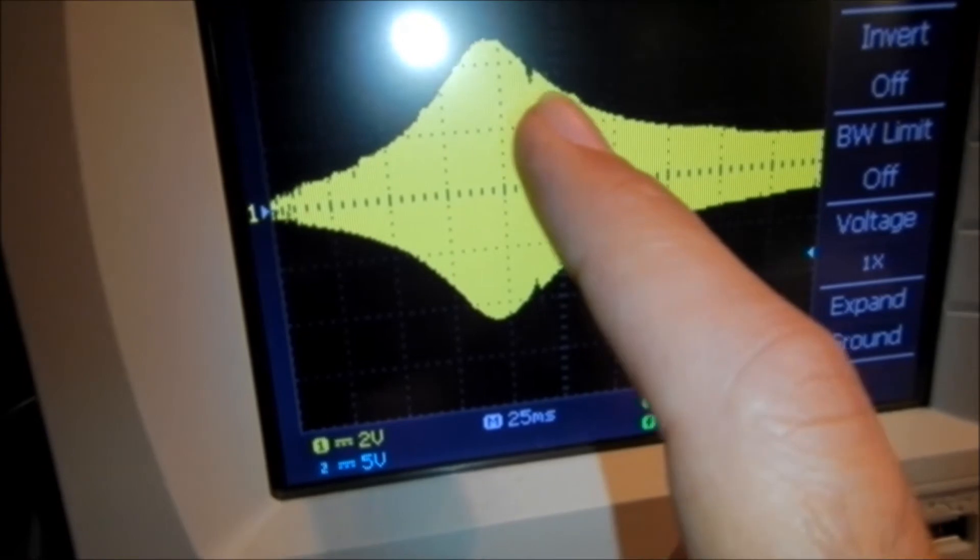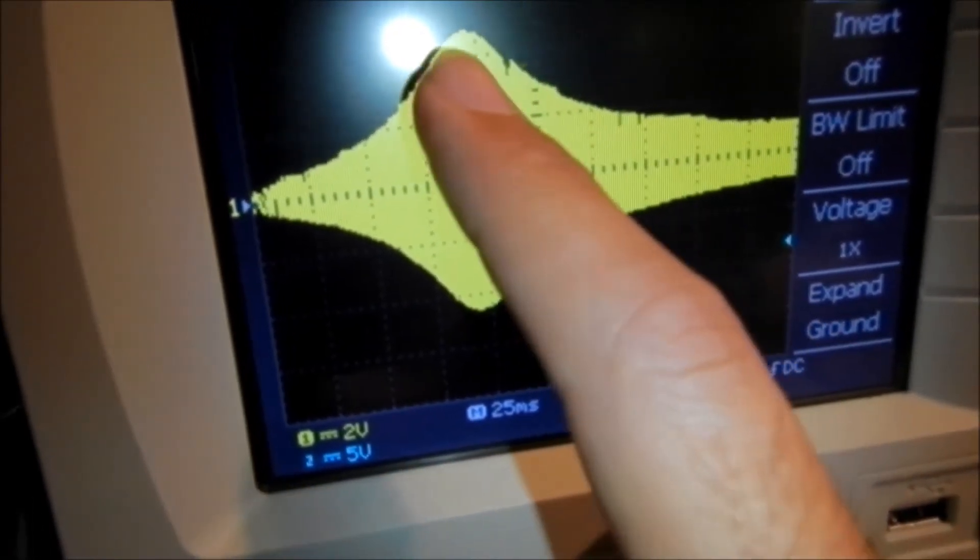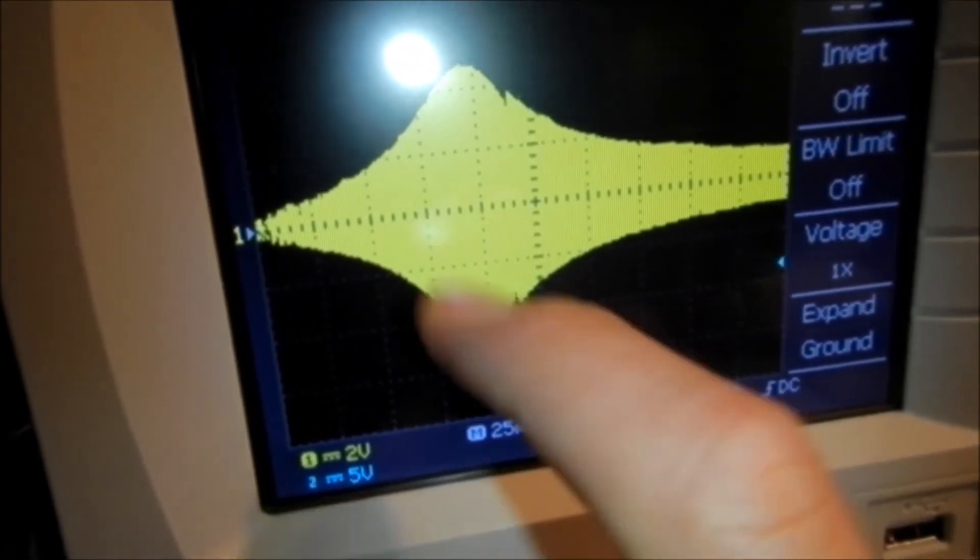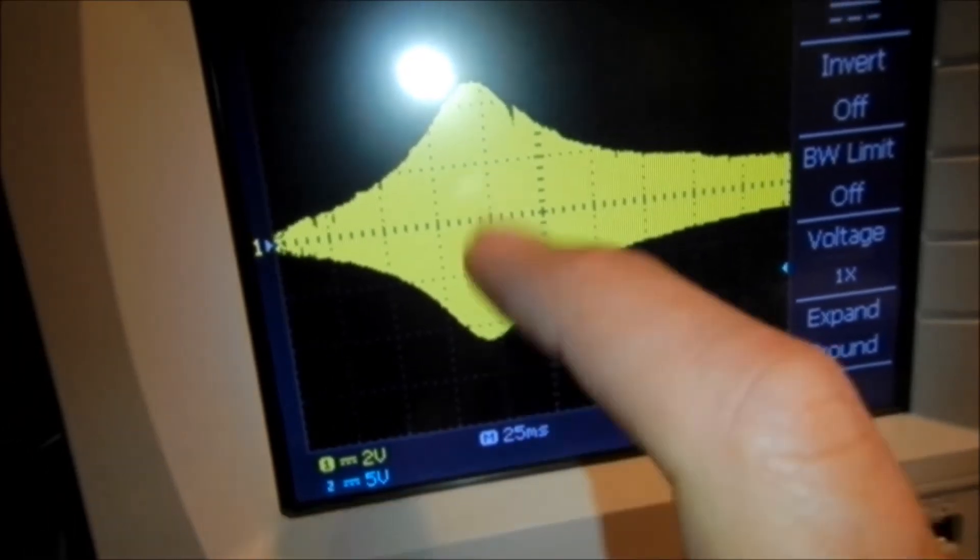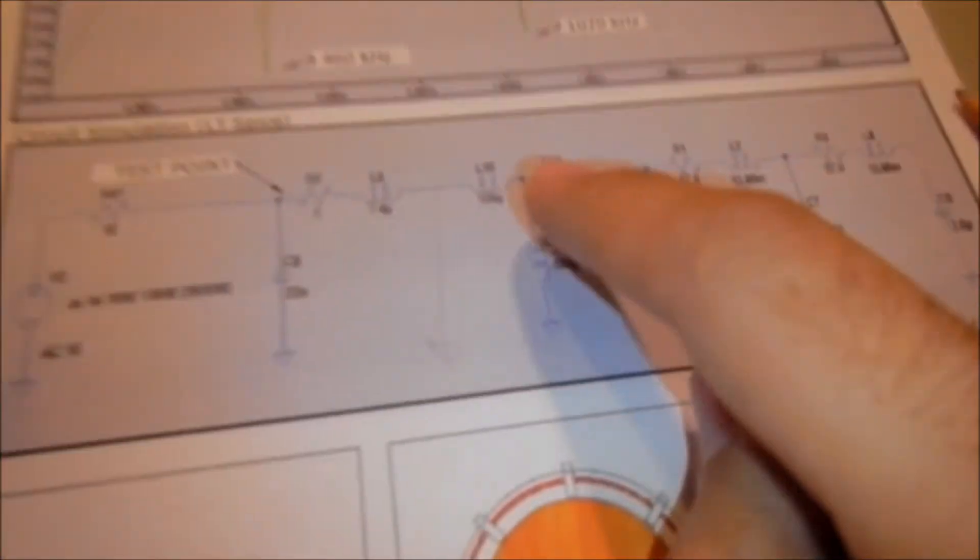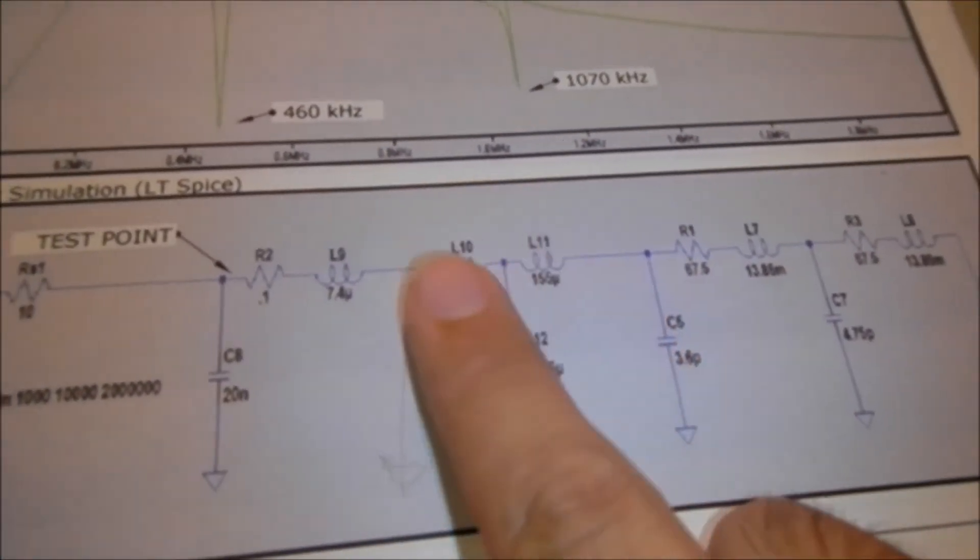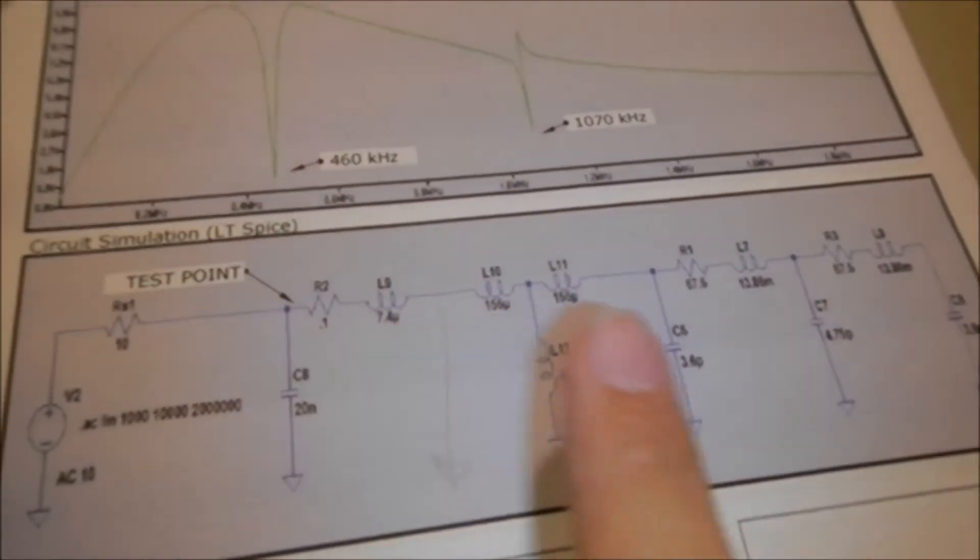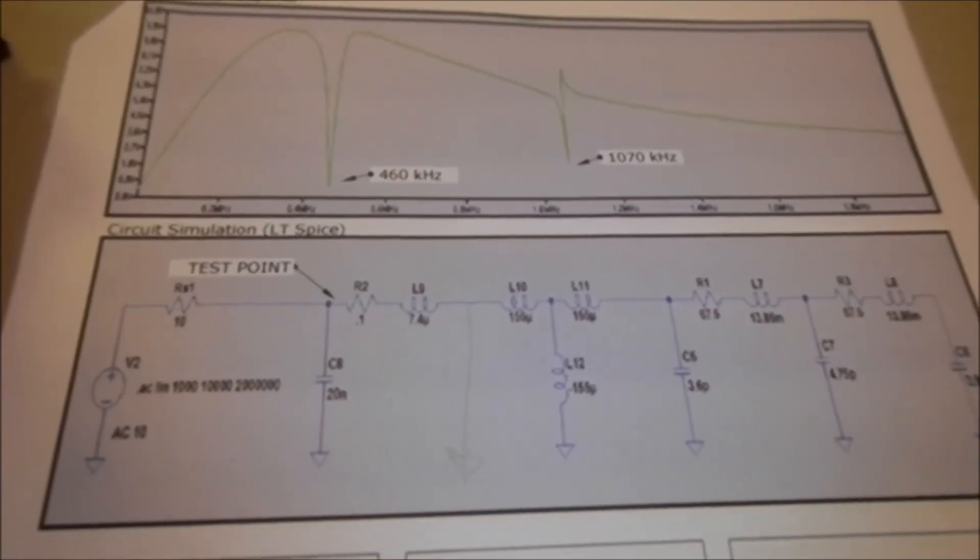And you can see we just have a very tiny dip. And we're shifting our resonant frequency up, upward, beyond the peak of our 460 kilohertz resonant frequency. So these inductive values do affect the resonant frequency of the overall system. So that's something to think about when you're tuning the Tesla coil.